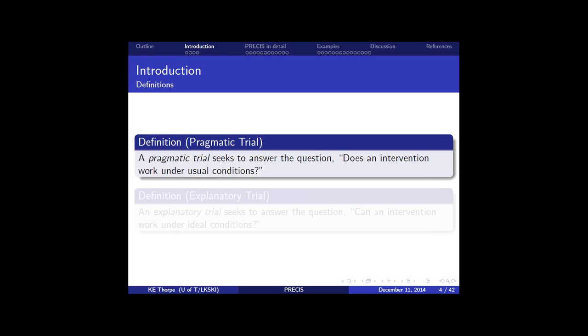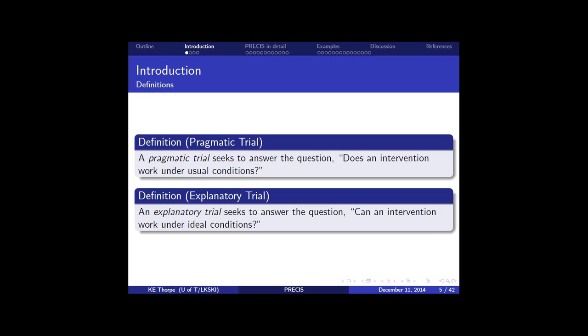So to get us all on the same page, we'll consider two definitions. And they're fairly broad and idealistic definitions, but they get the idea across. Pragmatic trial seeks to answer the question, does an intervention work under usual conditions? That is simply what it does. The explanatory trial seeks to answer the question, can an intervention work under ideal conditions?